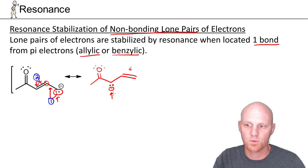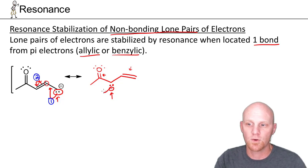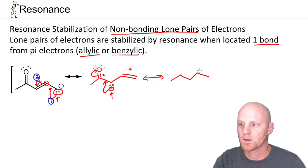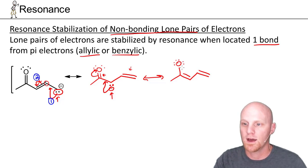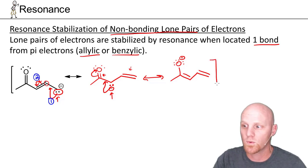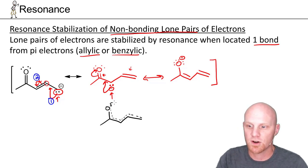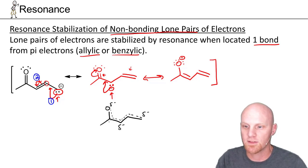Now we ask: is the lone pair one bond away from any other pi electrons? Indeed it is — from the double bond of the oxygen. We do the same pattern: the lone pair becomes a pi bond, and the pi bond becomes a lone pair, giving yet another resonance structure. We still have the original pi bond, and now there's a single bond to oxygen, which picked up a third lone pair. This carbon is no longer negative, but oxygen now has a negative one formal charge. We're not one bond away from any additional pi electrons, so that's our last resonance structure. The overall resonance hybrid is an average of all three, with partial pi bonds in multiple locations and partial negative charges on the oxygen and both carbons.